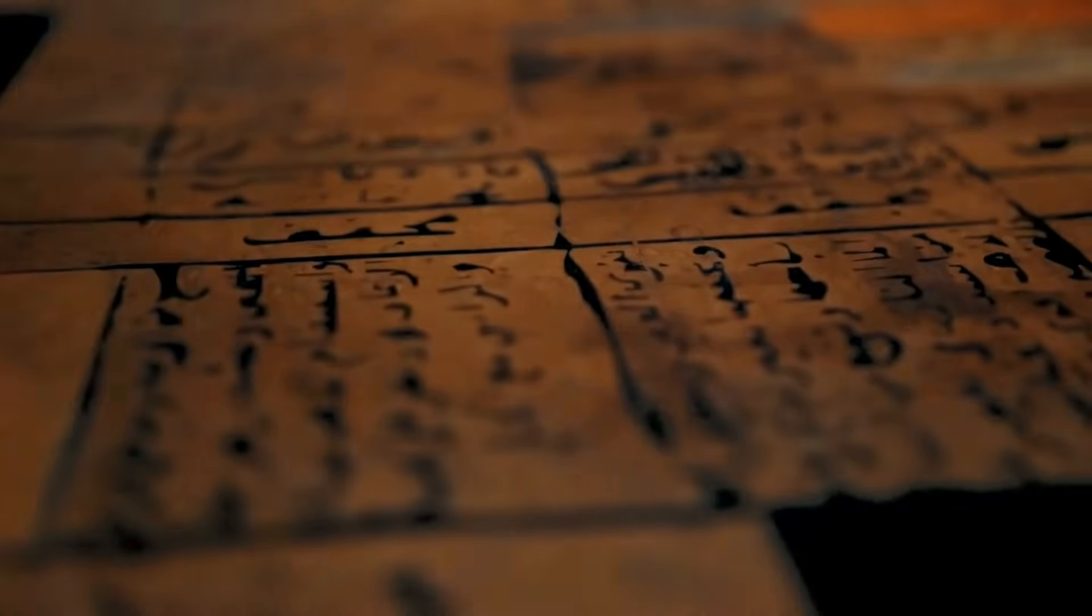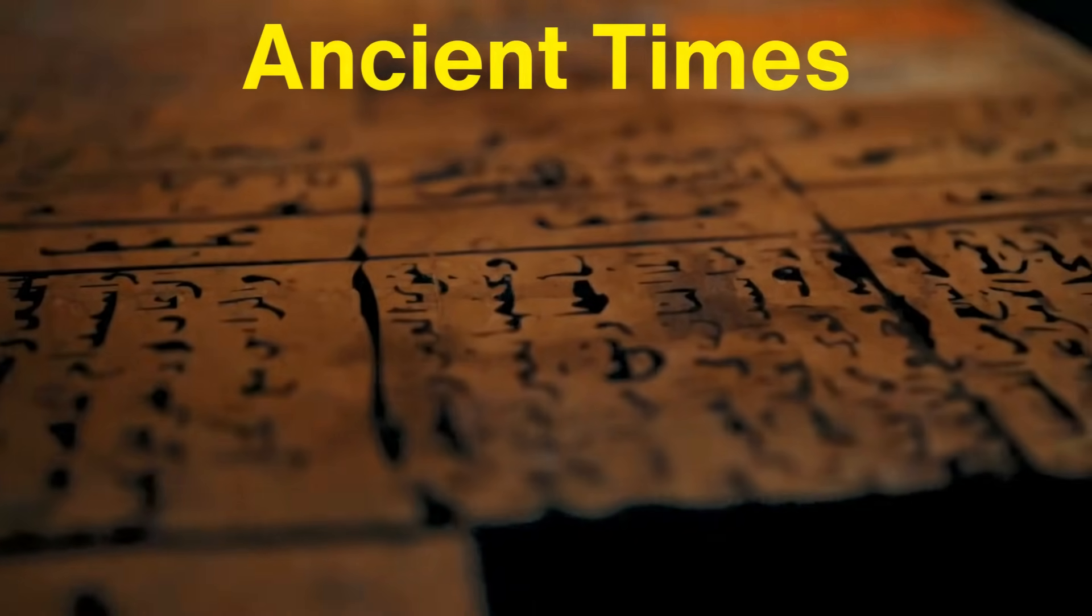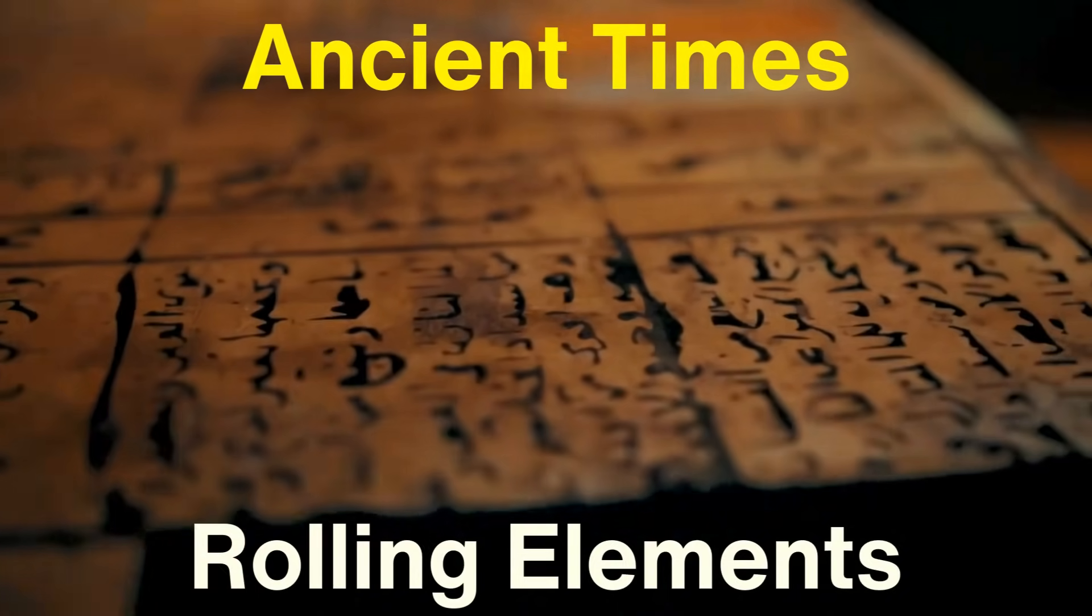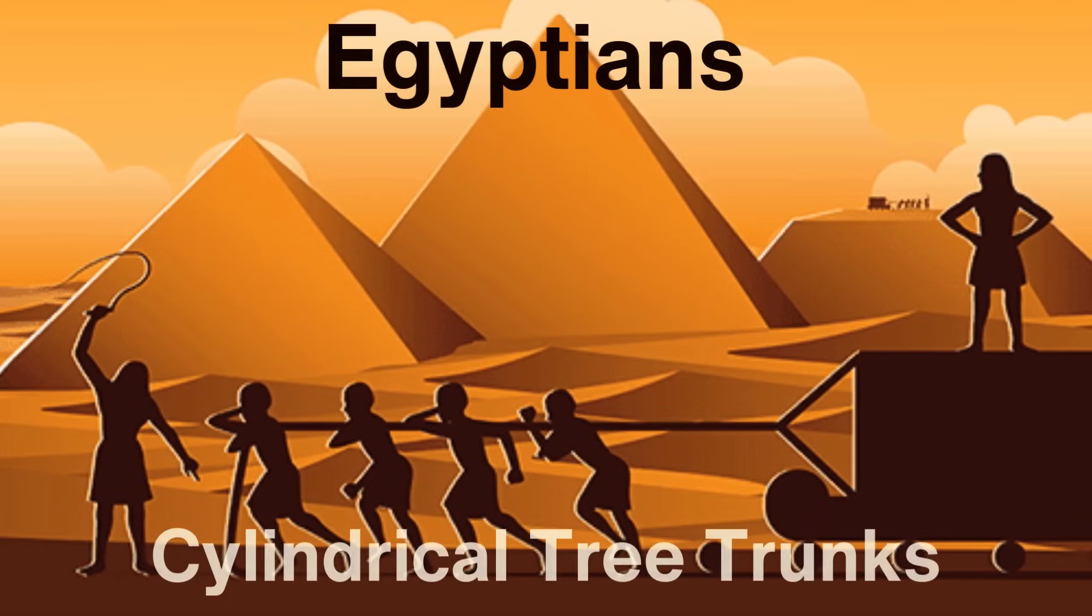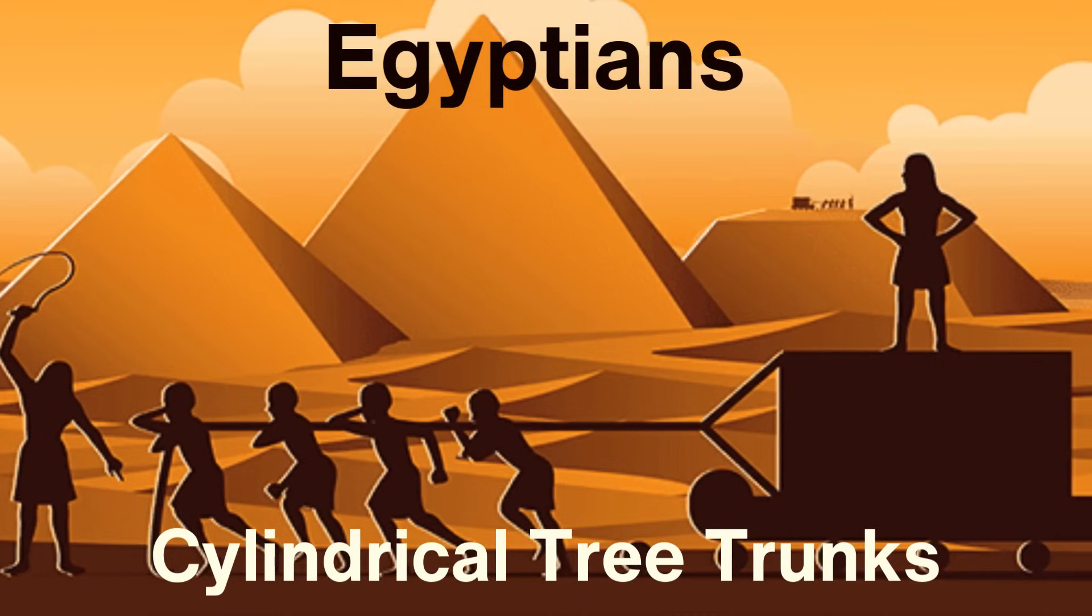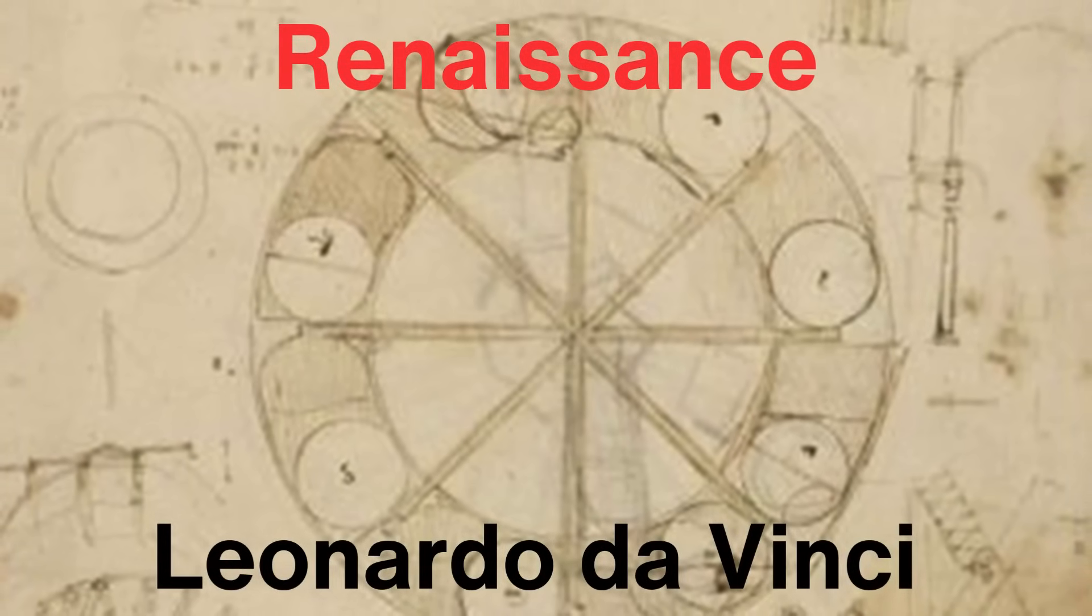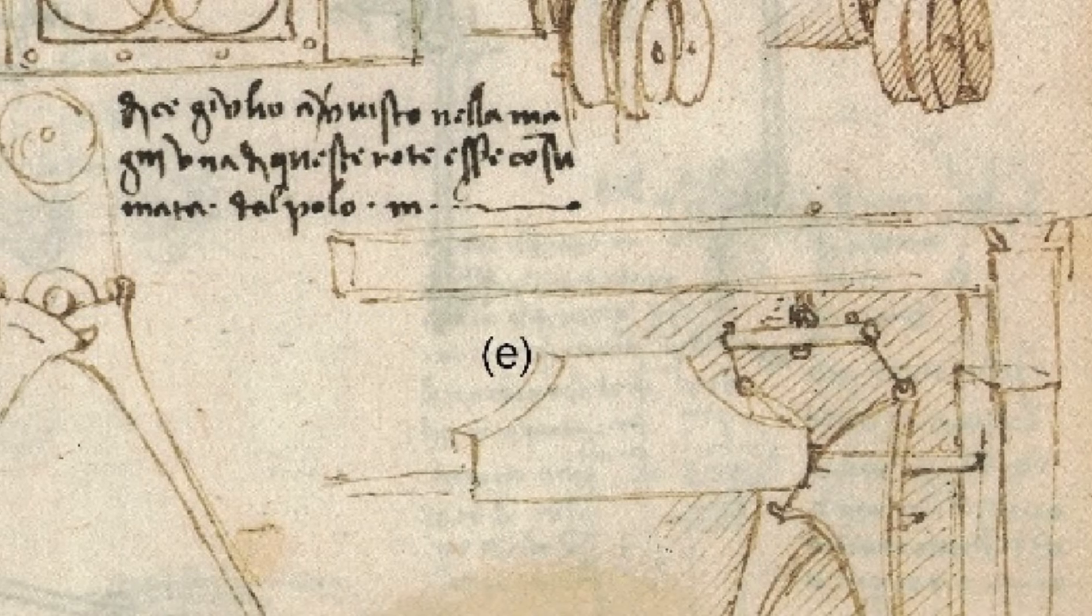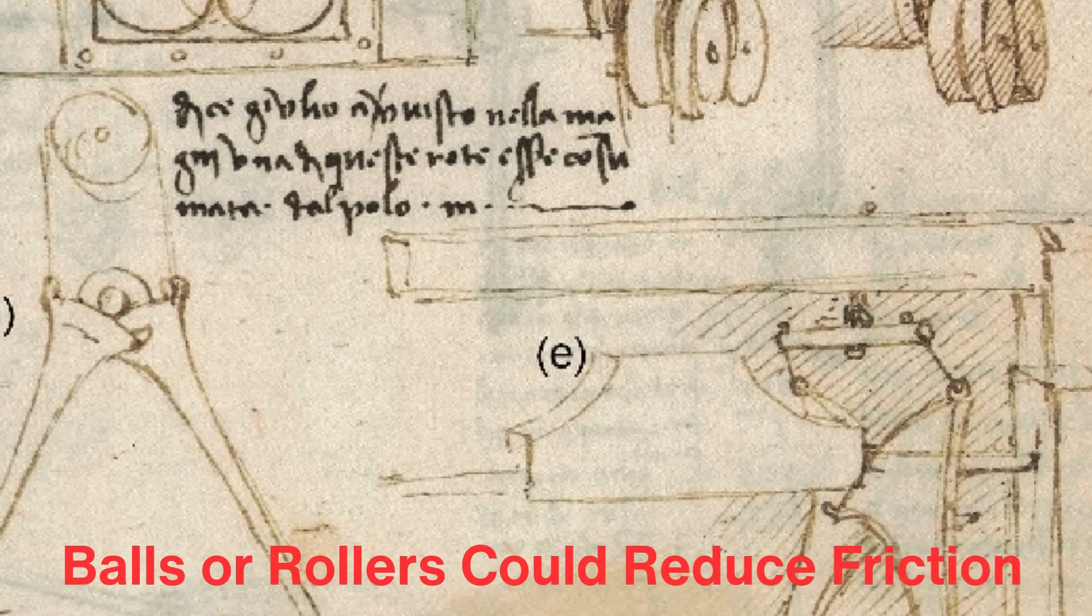The origins of ball bearings can be traced back to ancient times, but the modern development of this component started during the Industrial Revolution. The concept of rolling elements reducing friction has existed for centuries. Early evidence shows that the Egyptians used cylindrical tree trunks as rollers to move heavy stones while building the pyramids. Fast forward to the Renaissance, and none other than Leonardo da Vinci sketched early designs for ball bearings in his notebooks. Although his designs were never built, they showed how rolling elements like balls or rollers could reduce friction between surfaces.